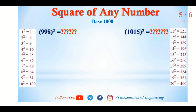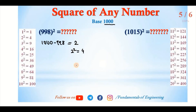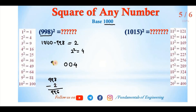Next, 998 squared — a three-digit number near 1000. By the traditional method this is difficult, but using the base method it's easy. 998 is less than 1000, so 1000 minus 998 is 2. Two squared is 4, but since we need three digits, we write 004. Then 998 minus 2 is 996. So the square of 998 is 996004.